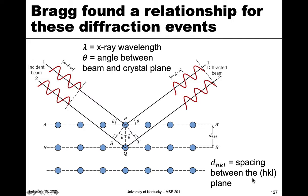Bragg is the name of a scientist who came up with these relationships for diffraction events. What he did was envision this experiment where we have a crystal, and here's a two-dimensional representation of this crystal.